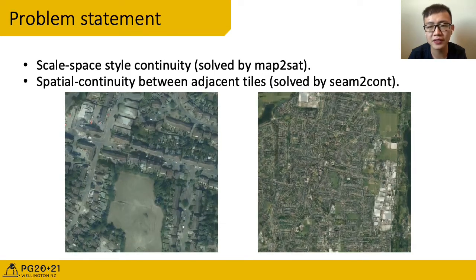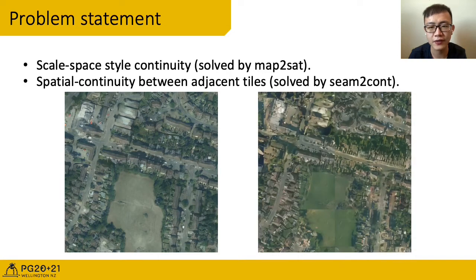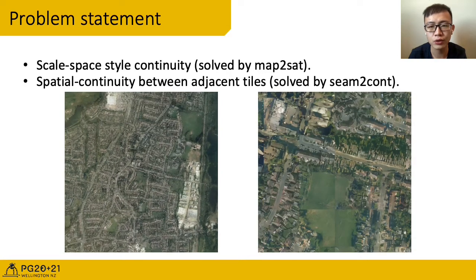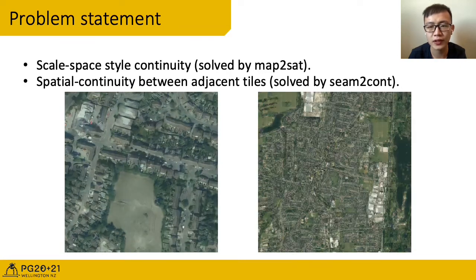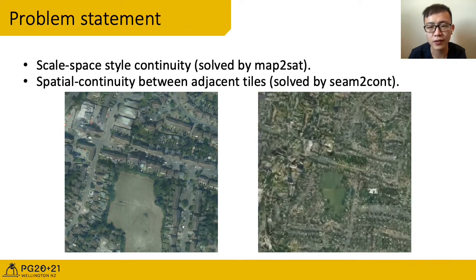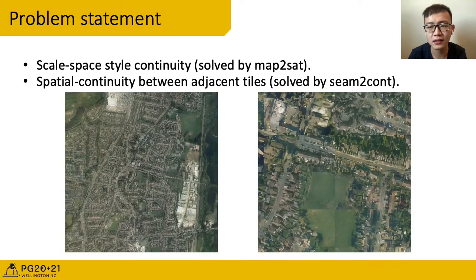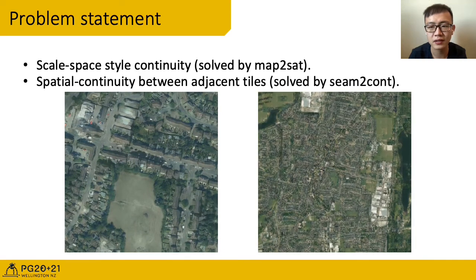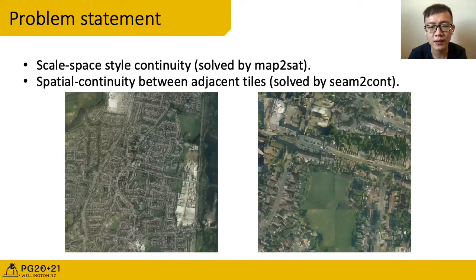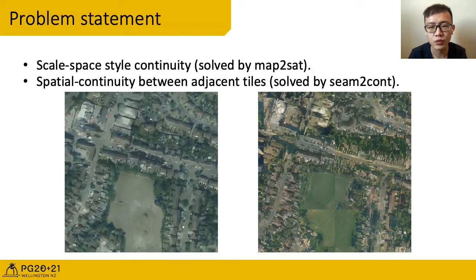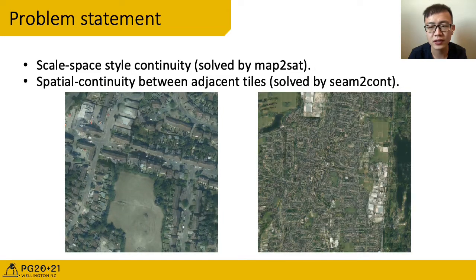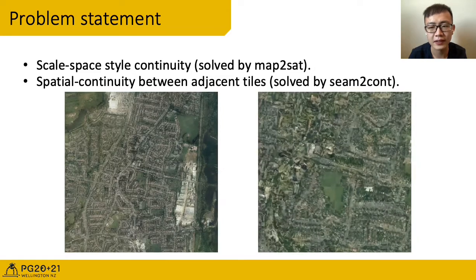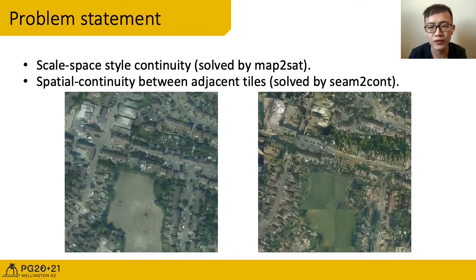If we want to have satellite images of different scale levels, we need to train the neural network of different scale. But this method cannot guarantee that the styles between different scales are consistent. Like in the last video, scale level 1 is in one style. If we generate the next scale level separately, it will end up with different styles.